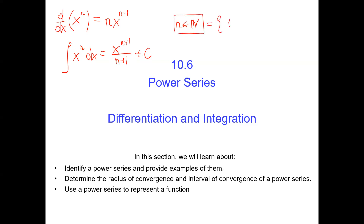The integral of x to the power of n is x to the power of n plus 1, all over n plus 1, plus the constant of integration. We remember we're excluding negative 1 from n, but since n is counting numbers — 1, 2, 3, and so on — we're good for all n values. That's basically what we will do in order to differentiate and integrate.